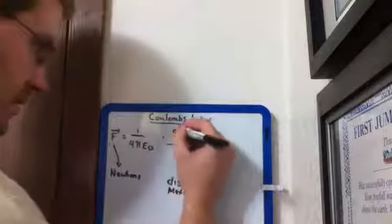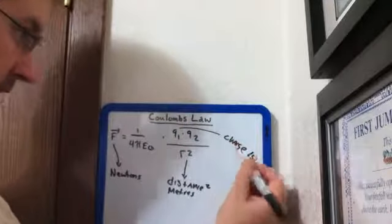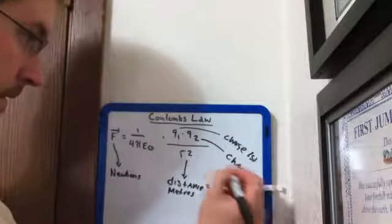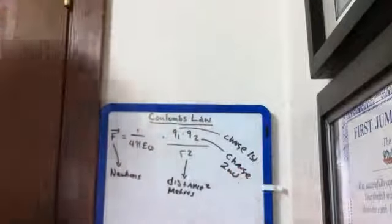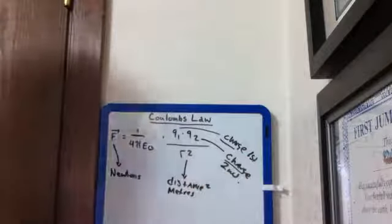The Q1 and Q2, this is just the charge of the first object and multiply by the charge of the second object. That's pretty easy, and we'll talk a little bit about how we measure charge because I haven't talked about that yet.